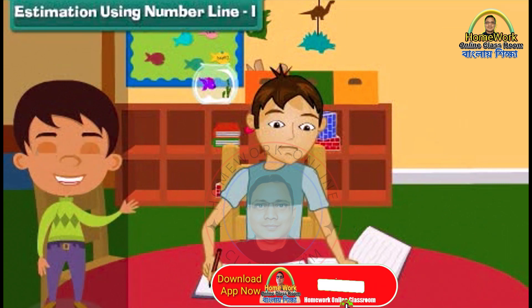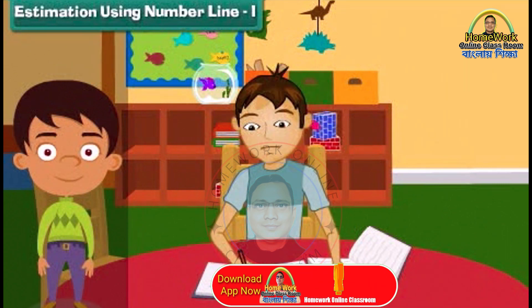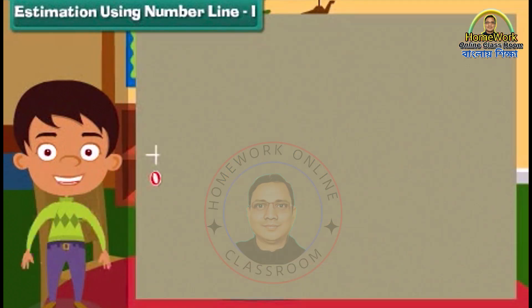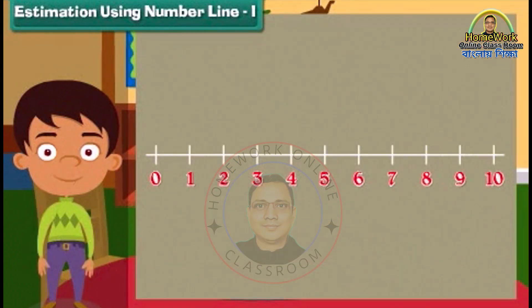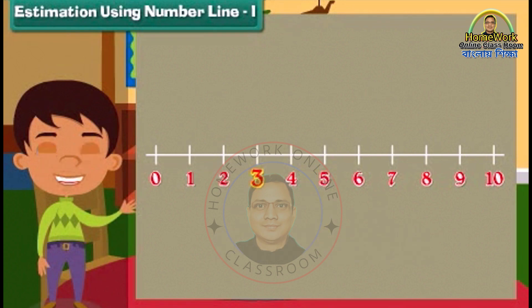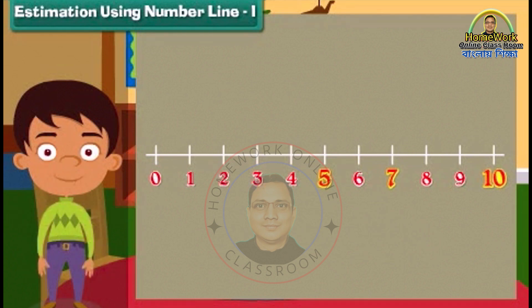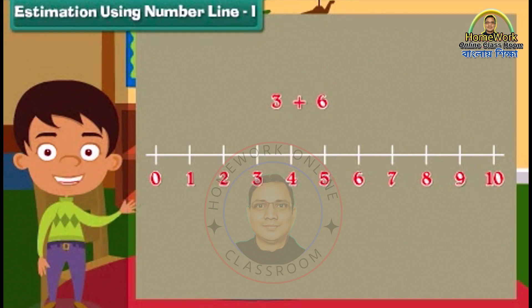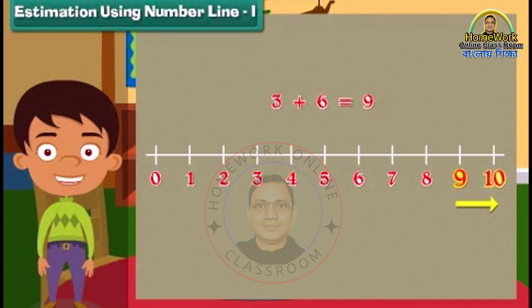Estimation using number line. Let us try something interesting. On screen you see a number line from 0 to 10. Can you guess the position of number 5 on this line? Yes — it will be in the middle of the line. The position of number 3 will be between 0 and 5, and number 7 will be between 5 and 10. By adding 3 and 6, we get 9, and the position of 9 will be near to 10.